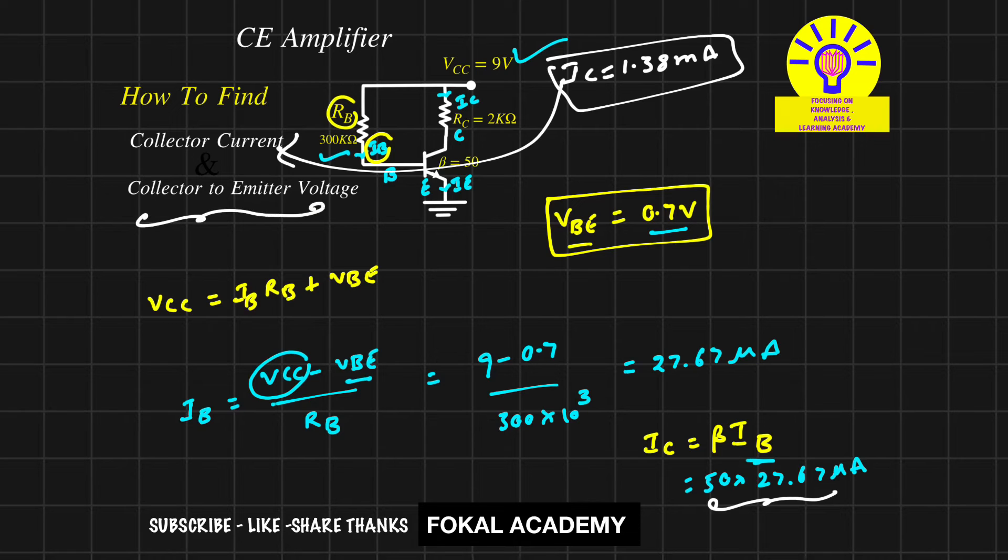Now, how to find collector to emitter voltage? Apply KVL in this path. We get VCC = IC × RC + VCE. From this, we get VCE = VCC - IC × RC.